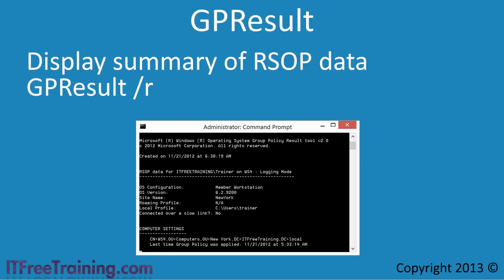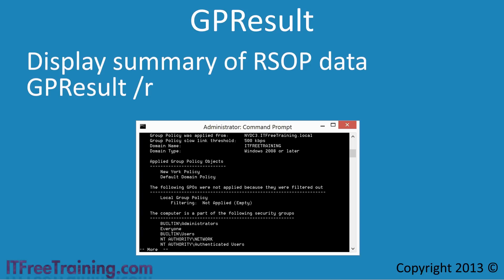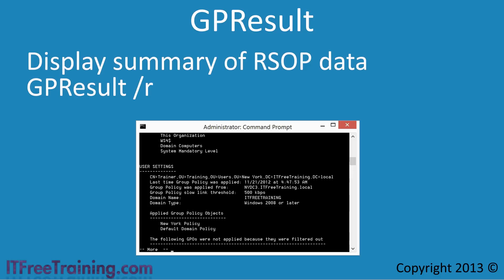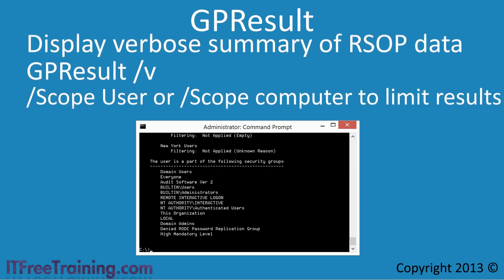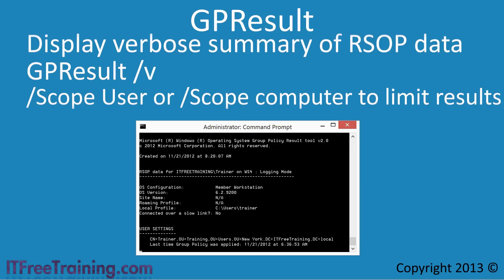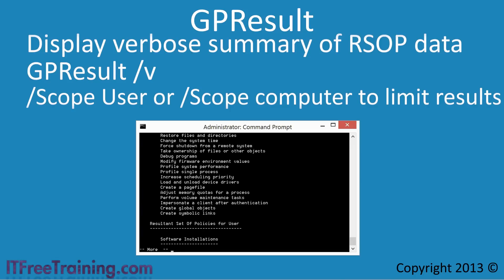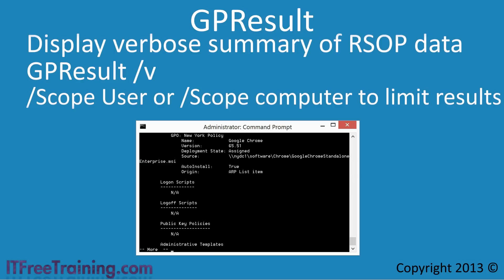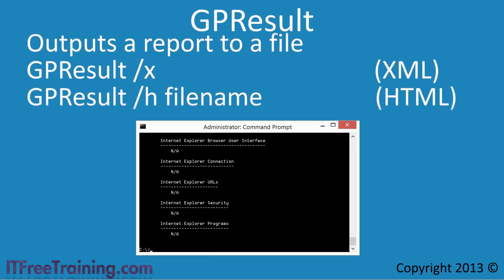The /r switch gives you basic information about the group policies applied to this computer. For basic troubleshooting it is a fast way to determine which group policies have been applied, which OU the user and computer account is in, and which settings such as slow link have been enabled. If you want additional information you can use the /v switch for verbose mode. I have added the /scope switch with the user option to limit output to user configuration only. If I did not add the scope switch the amount of data would be quite large. You can also use the scope option to limit the output to computer configuration only.